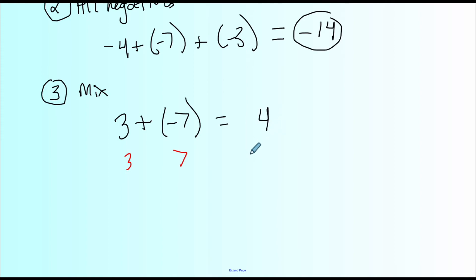Now how do I know if my final answer is positive or negative? I just go back to the original numbers, 3 and -7, and which one has a bigger absolute value? This one does. Seven is bigger than 3, and since the 7 is negative, my answer is negative.